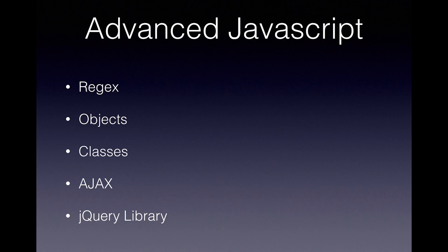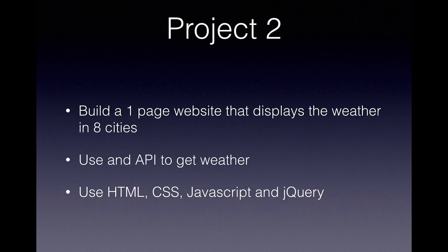Once you've done all that, move on to advanced JavaScript. Look at what regex is, look at objects, classes, and AJAX requests. At this point I also suggest looking at the jQuery library, because by now you should know JavaScript quite well and you'll really understand what jQuery can do for you. Then do project two: build a one-page website that displays the weather in eight global cities, using an API to get the weather, with HTML, CSS, JavaScript, and jQuery.